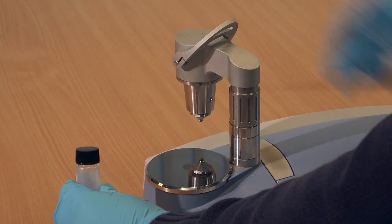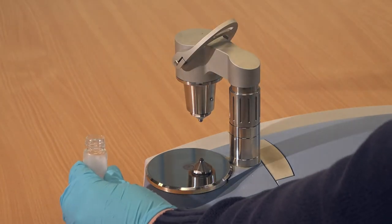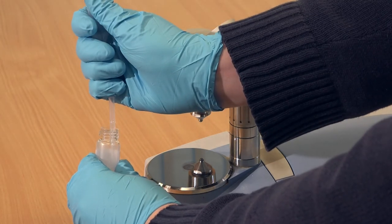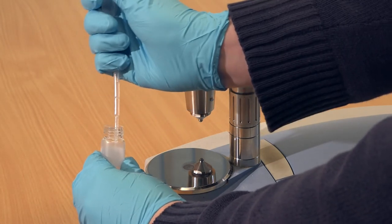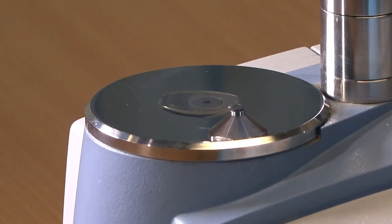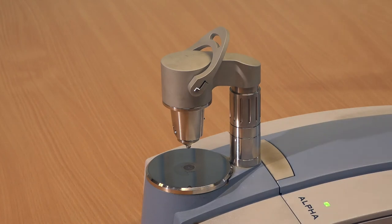With the arm raised and rotated out of the way, use a pipette to place a few drops of the liquid sample onto the plate so it covers the diamond completely. Rotate the arm so that it lies above the sample but do not lower it.